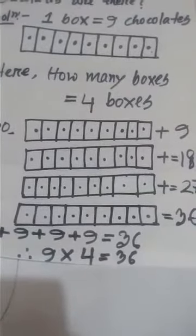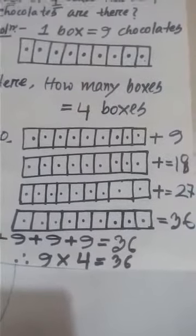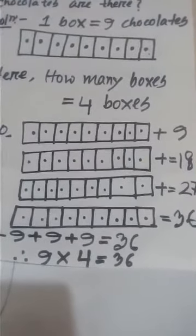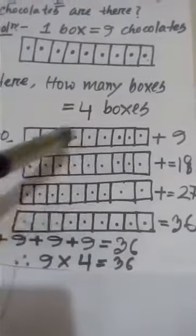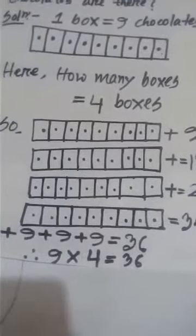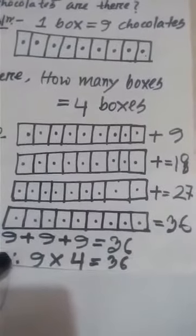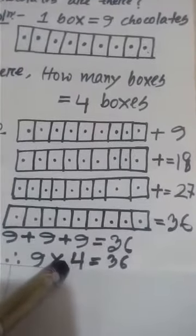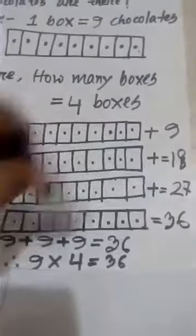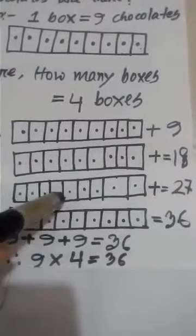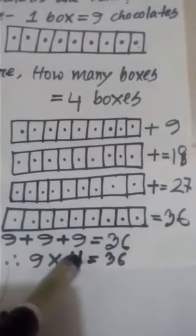So, in the 1st box: 9 chocolates. 2nd box: 9 plus 9 equals 18. 3rd box: 18 plus 9 equals 27. And our 4 boxes — total result is 36. In 4 boxes, how many chocolates? 36 chocolates. 9 plus 9 plus 9 plus 9 equals 36. Therefore, 9 times 4 equals 36.